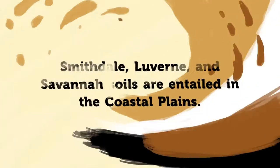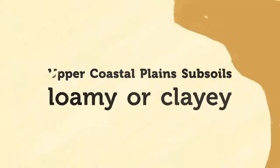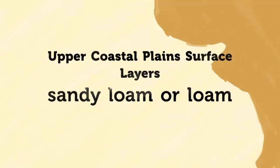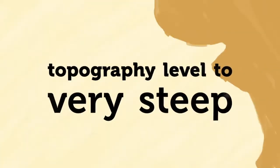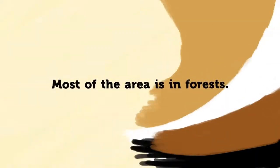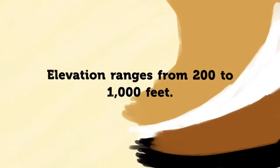Smithdale, Luverne, and Savannah soils are extensive in the upper coastal plains. They have either loamy or clay subsoils and sandy loam or loam surface layers. Savannah soils have a fragipan. Topography is level to very steep. Narrow ridgetops and broad terraces are cultivated, but most of the area is in forests. Elevation ranges from 200 to 1,000 feet.